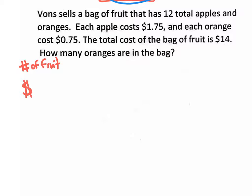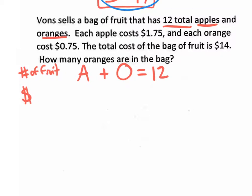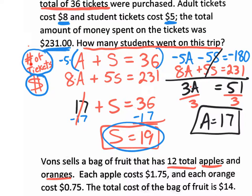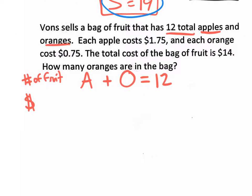There's a bag of fruit with a total of 12 apples and oranges. We don't know how many apples and we don't know how many oranges, but we know A + O = 12. That's the equation based on number of fruit — same idea as before, where we made A + S = 36 for the tickets problem.